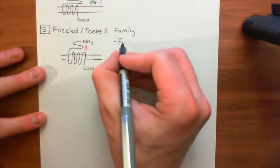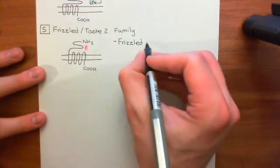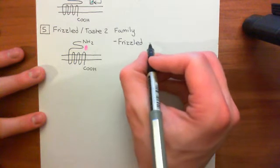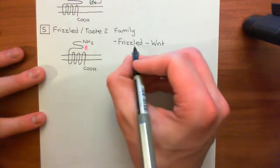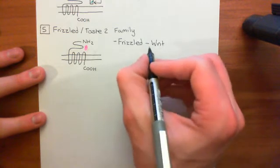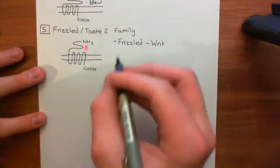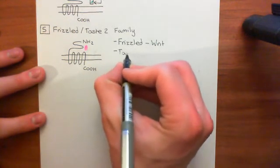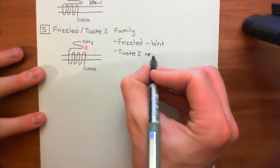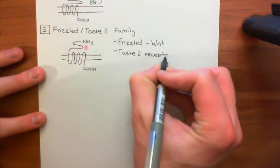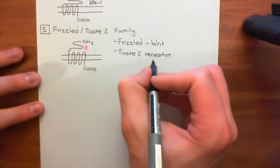The two most famous members of the Frizzled/Taste2 family are the Frizzled receptor, which is important in the Wnt-beta-catenin pathway — its ligand is Wnt, which activates that pathway controlling cell division — and the Taste2 receptor, which is important in the gustatory system for sensing bitter-tasting molecules in the oral cavity.